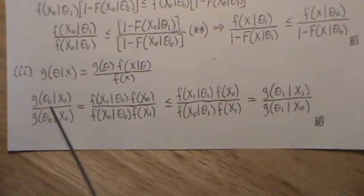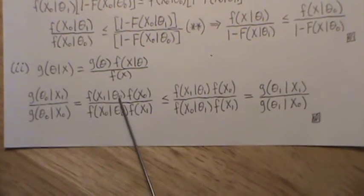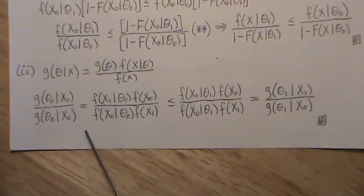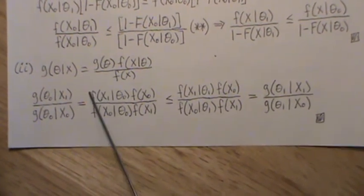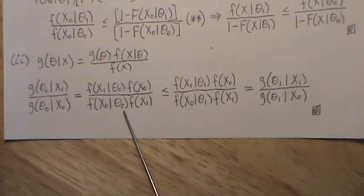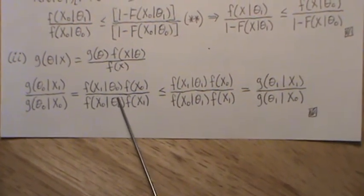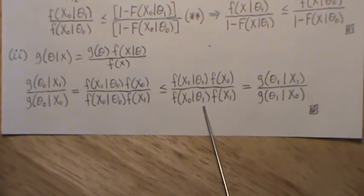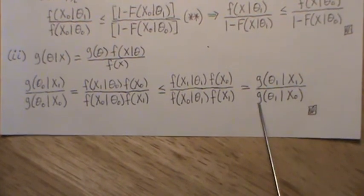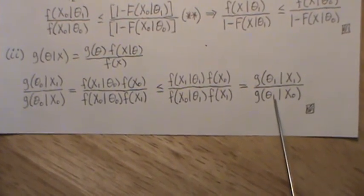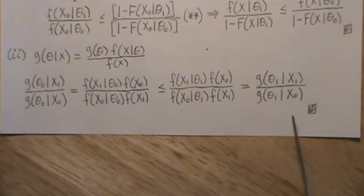We can write this ratio in expanded form — the g(x) terms cancel in both numerator and denominator. Because f(x | theta) has the monotone likelihood ratio property, we get the key inequality. This can be rewritten: the left side is the Bayesian update for theta_1, and this is bigger than that — using the monotone likelihood ratio property throughout. That completes the proof.